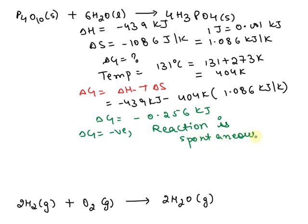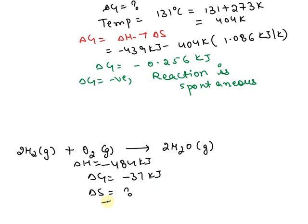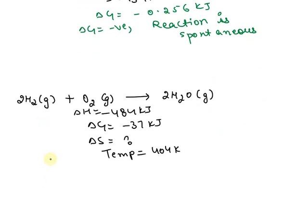Now in the next part, for this reaction the delta H value is equals to minus 484 kilojoule, and delta G is equals to minus 37 kilojoule, and here we have to find out the delta S value. The temperature is the same, that is 404 kelvin. The formula used is the same: delta G equals delta H minus T delta S.